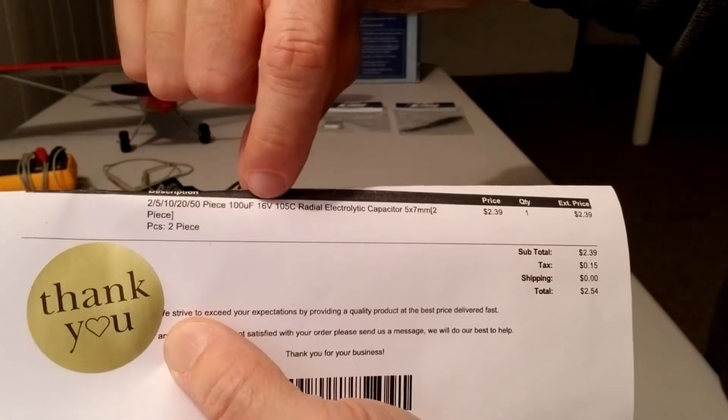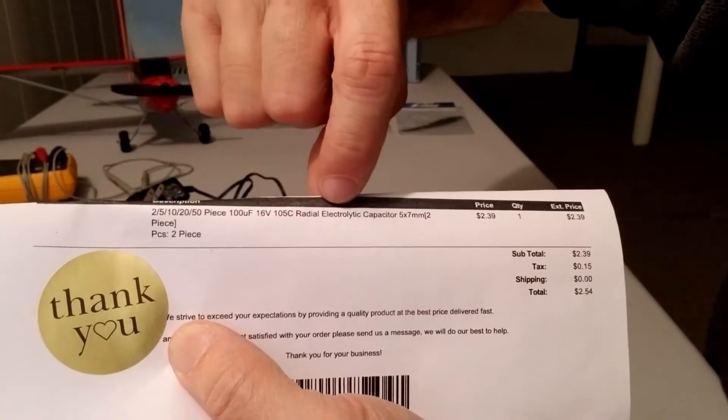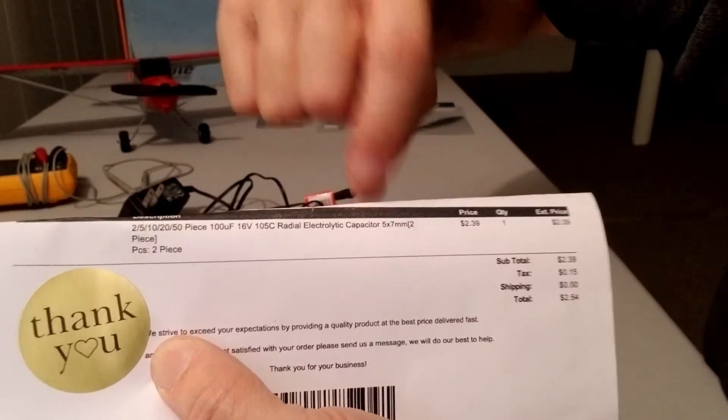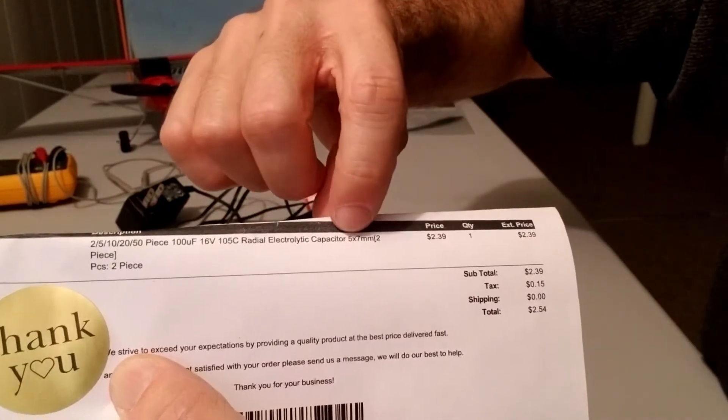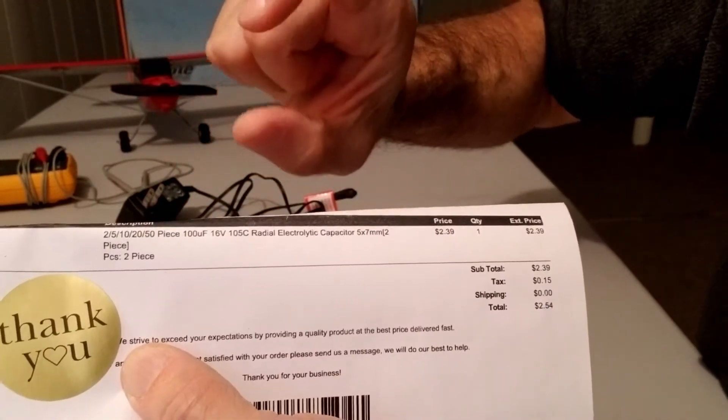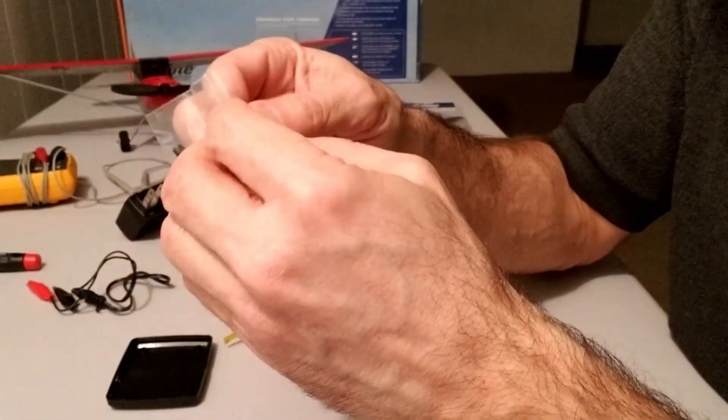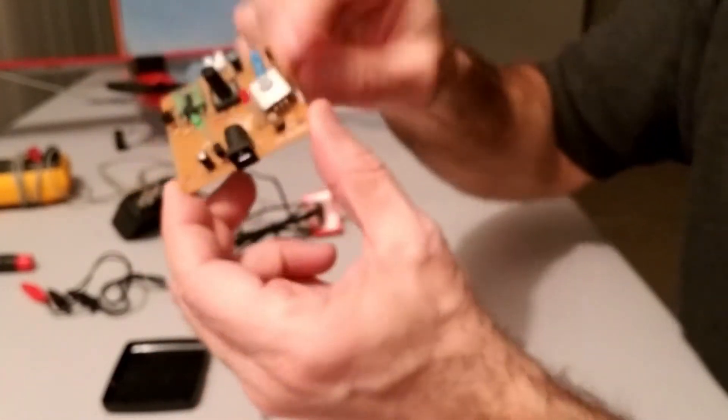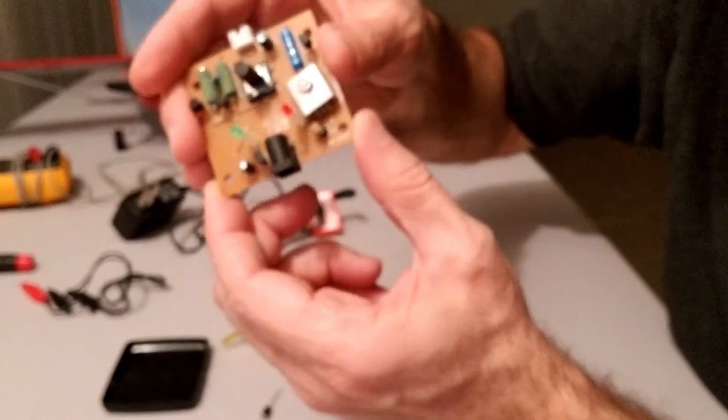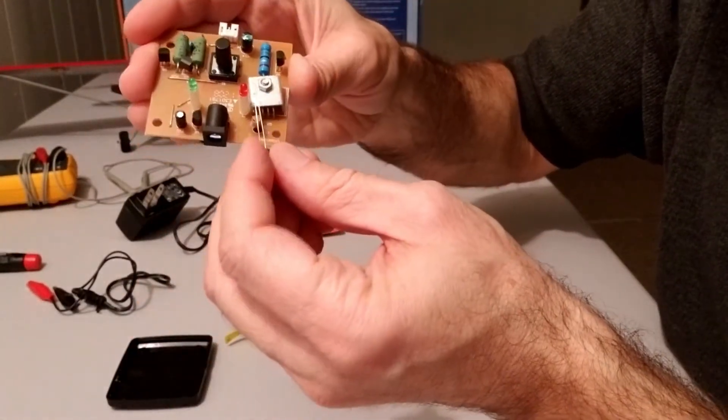100 microfarad, 16 volt, 105 Celsius electrolytic capacitor. And the size, and I measured the size of this one to make sure I was getting the right one, 5 millimeters in diameter and 7 millimeters tall. So I ordered and they came in and they look like they are the right ones. So I'm going to take this blown one out and then replace with this one. And hopefully it's going to do the job.